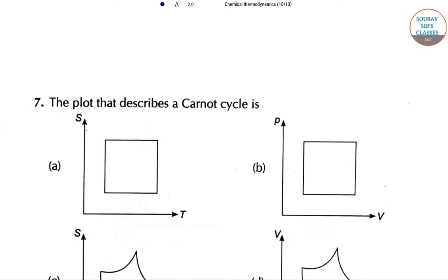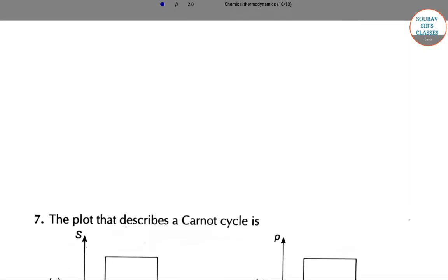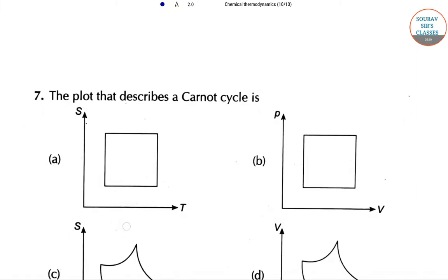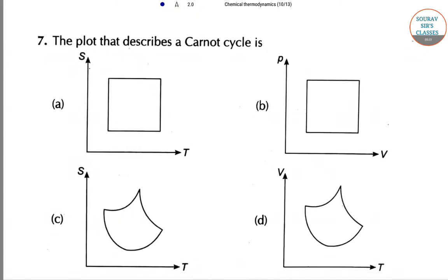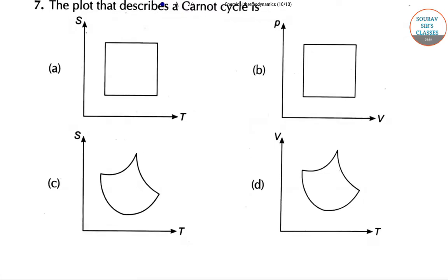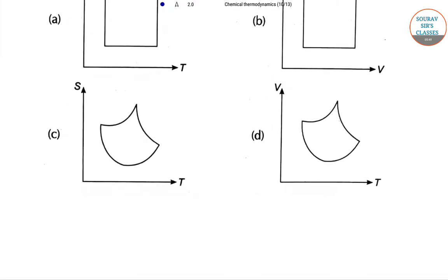The next question: which plot describes the Carnot cycle? Looking at the options, the answer is A. In the Carnot cycle, there are four processes — two are reversible and two are adiabatic — and graph A satisfies these processes.